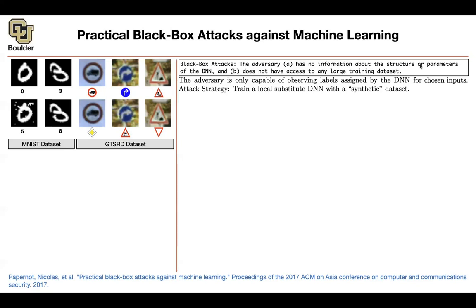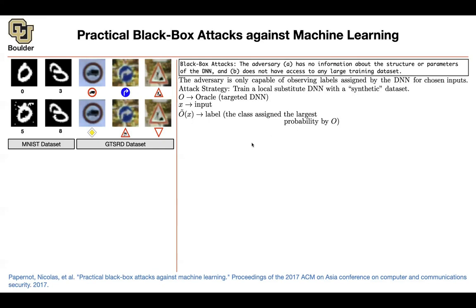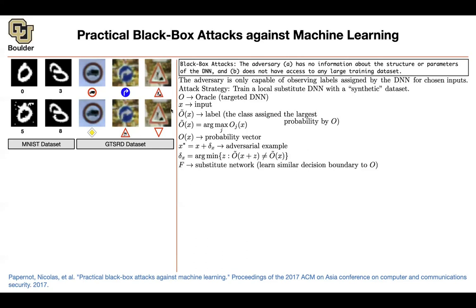You don't know the architecture, you don't know the training data used, but you can evaluate it — and that's all you need. What are you going to do? You don't know the architecture, but you can have a local substitute for their neural network. You're going to come up with your own neural network and generate some synthetic data on the fly to substitute the large training data set. O is the oracle — the targeted deep neural network you want to attack. You don't have access to its structure or parameters, but you can have a copy of a neural network on your local machine.